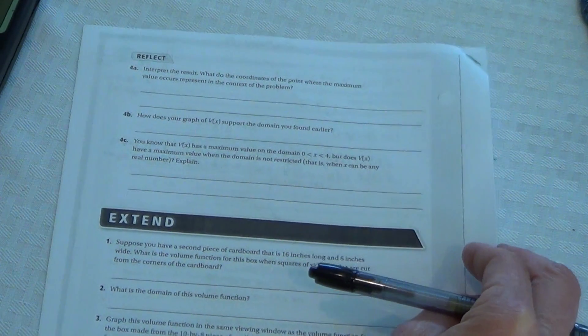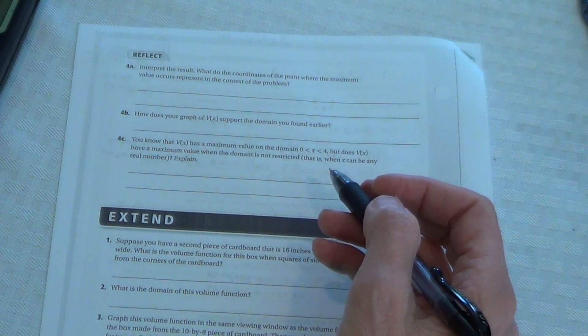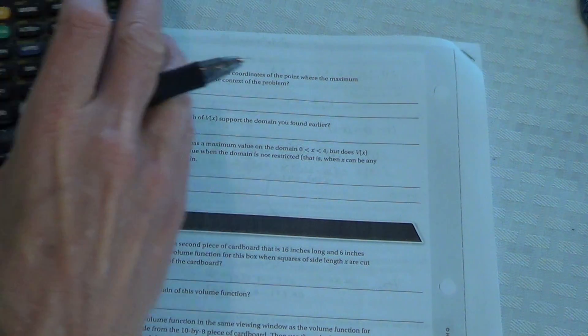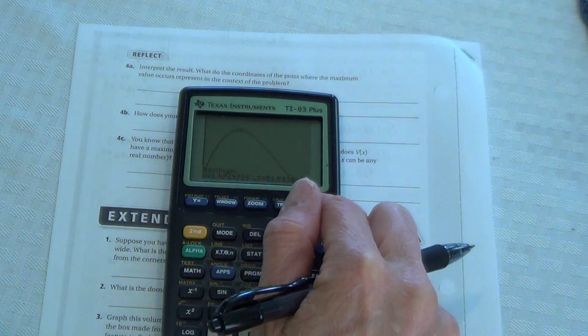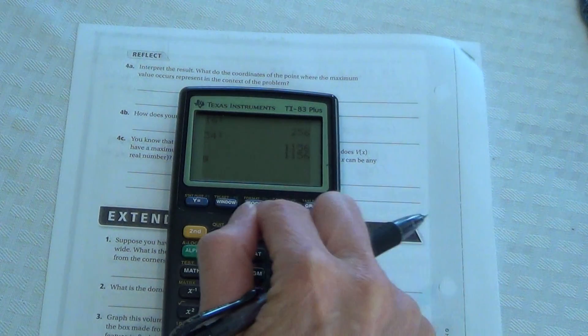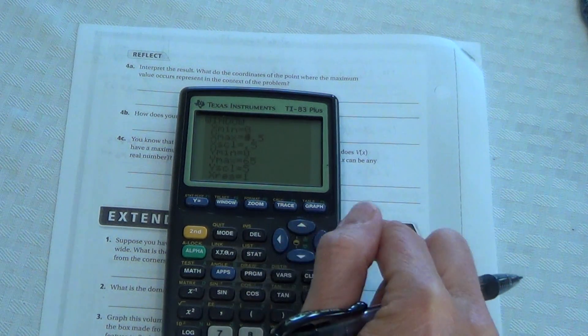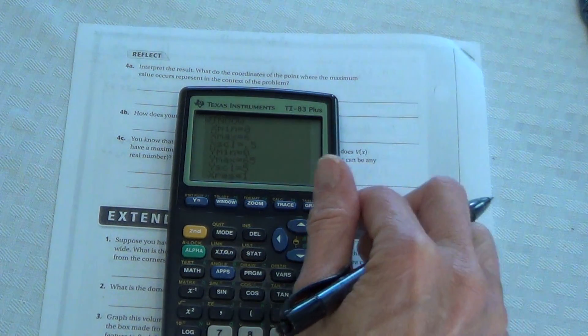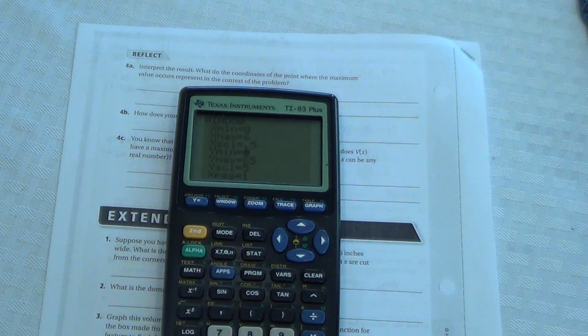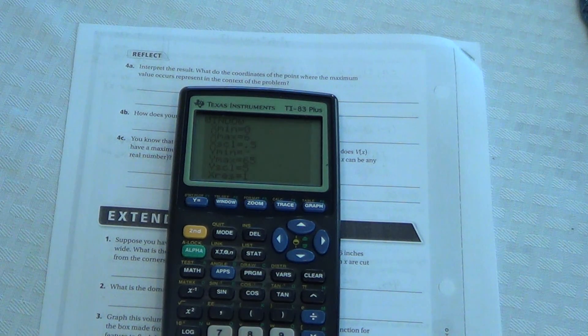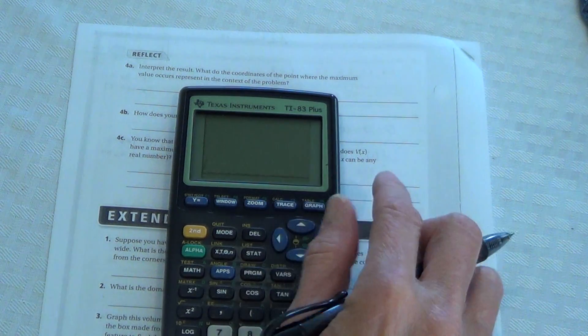Interpret the result. What is the coordinates of the point where the maximum value occurs represent in the context of the problem? I just explained this. Rewind the video and just fill in what I said there in your own words. How does your graph of v of x support the domain you found earlier of 0 to x? 0 is less than x and x is less than 4. Well here's what I would suggest when you're looking at that. How does the graph support that? Well let's just go back to window. Let's go second quit and go window. And let's go beyond what our x values were. Let's go up to 6. And I just randomly went to 6 so that it gives us plenty to look at. And now let's go on the y. Let's go to a minimum so that we can see what's happening to the graph after it crosses. Let's go a minimum 5. Okay.